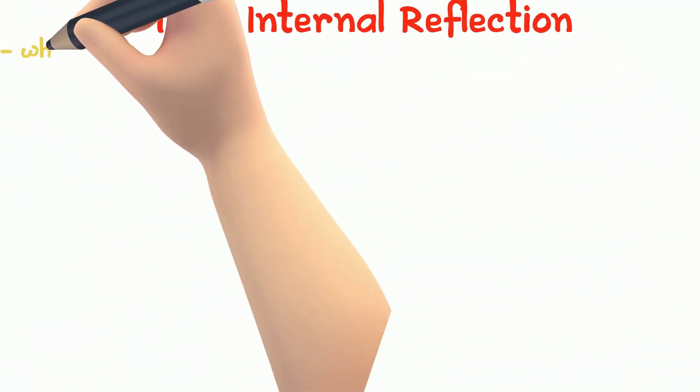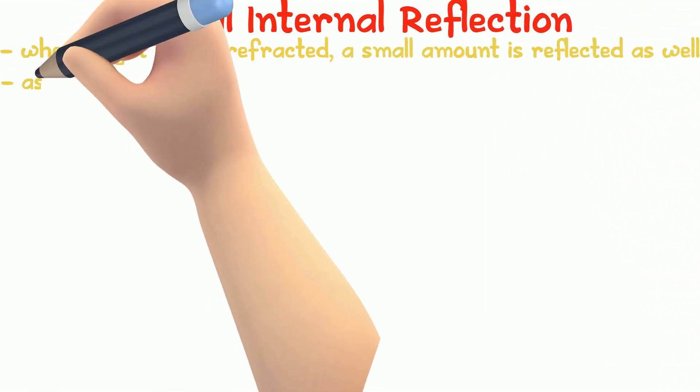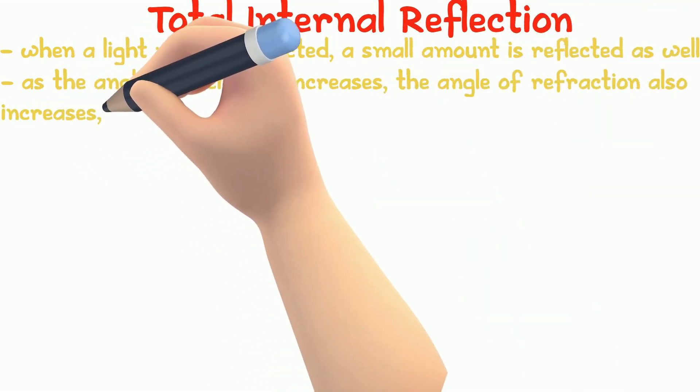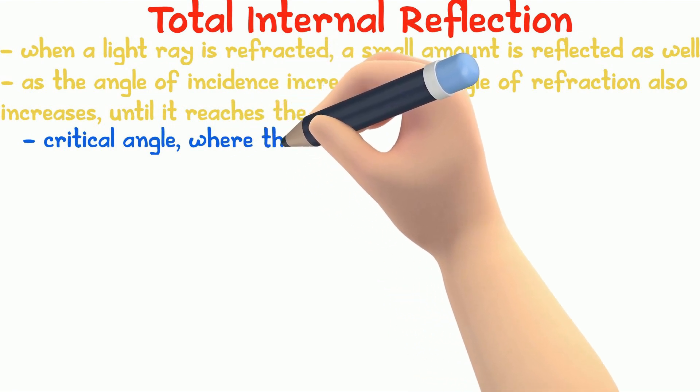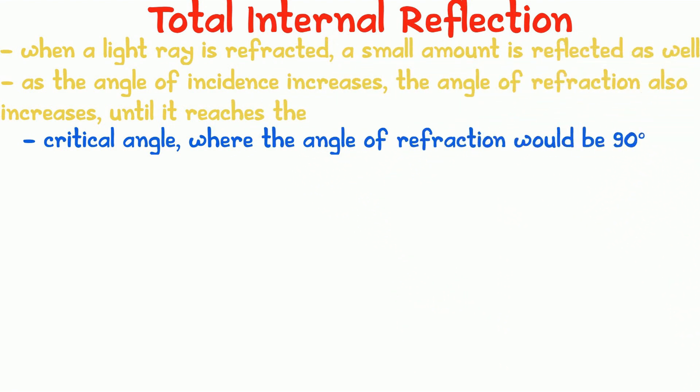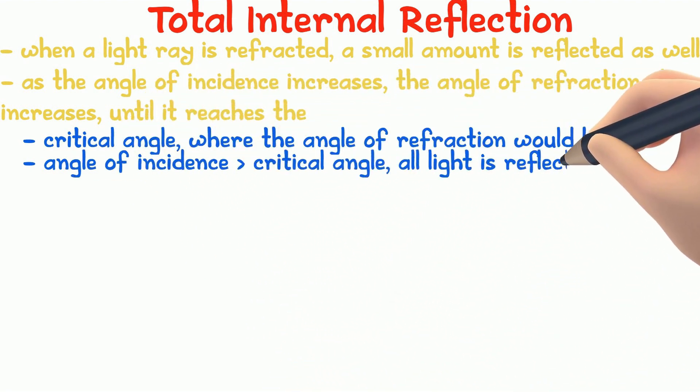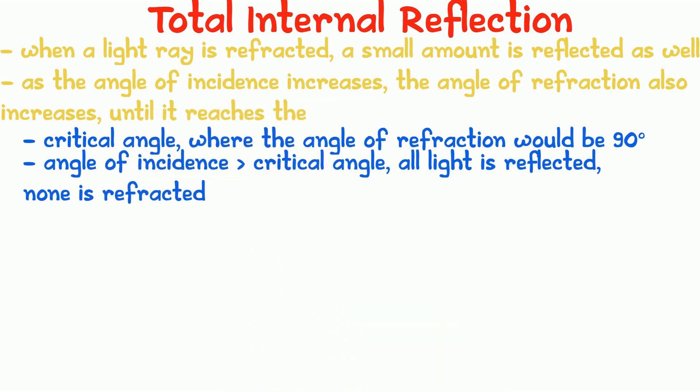When a light ray is refracted, there is a small amount that is reflected as well. But as the angle of incidence increases, the angle of refraction also increases, until it reaches the critical angle. When the critical angle is reached, the angle of refraction would be 90 degrees. When the angle of incidence is larger than the critical angle, all the light is reflected. None is refracted. We call this total internal reflection.